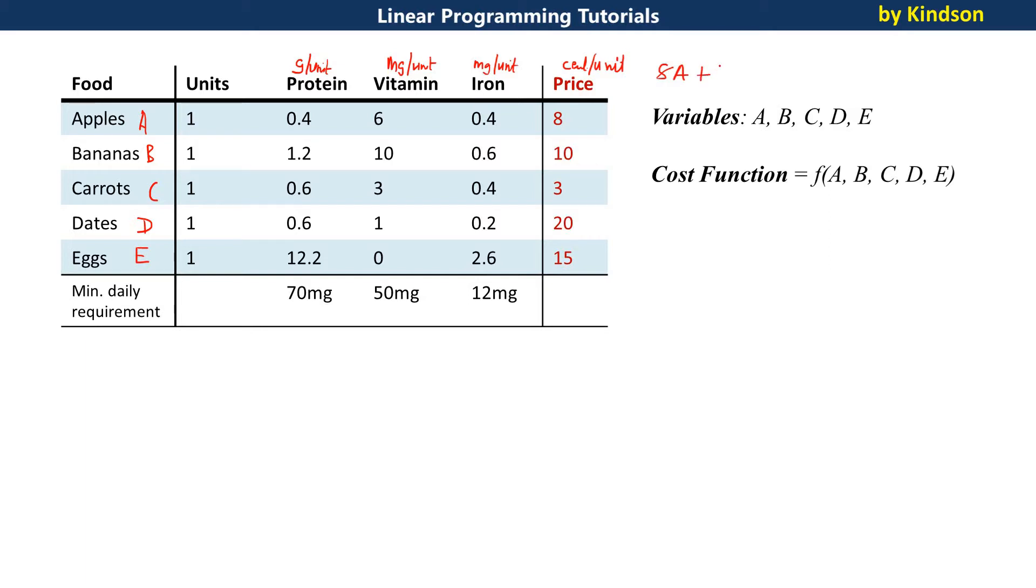This is for apple. For banana, it's going to be 10 cents, so let's call it 10B. That is the price of banana. For carrots, the cost for carrots is 3, so 3C. If we are eating carrots, we are paying 3 cents. And we are eating dates, which is 20 cents, that is 20D. Plus, eggs cost 15 cents, that's 15E.